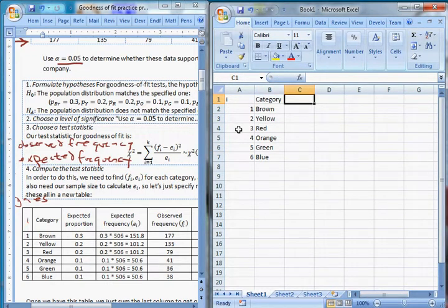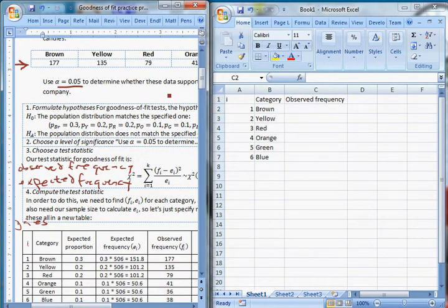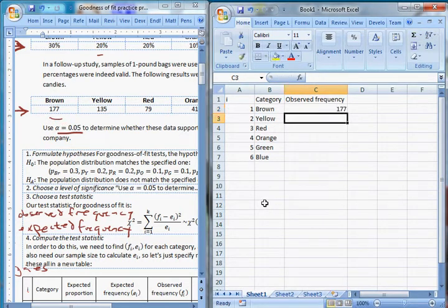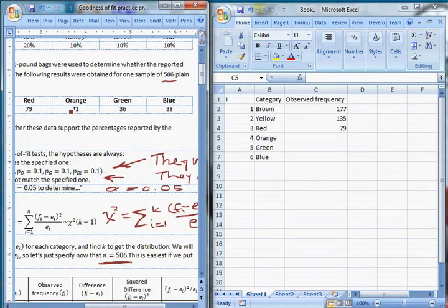And for each one, I'm actually going to build this a little bit differently. It doesn't really matter how you build it. But I'm going to put our observed frequency here because they gave that to us. So our observed frequencies just come right from this table here. So we saw 177 brown candies, 135 yellow candies, 79 red candies, 41 orange, 36 green, and 38 blue.